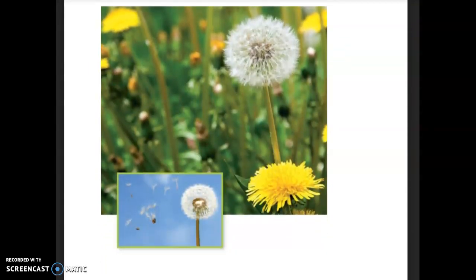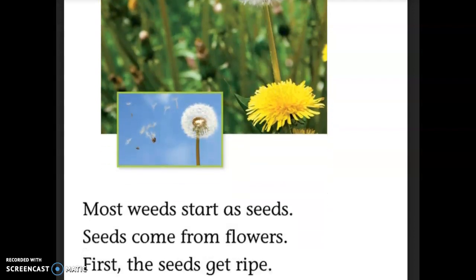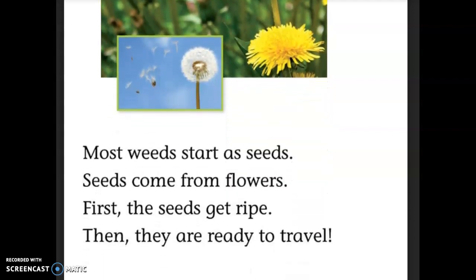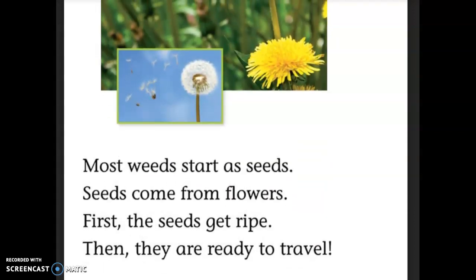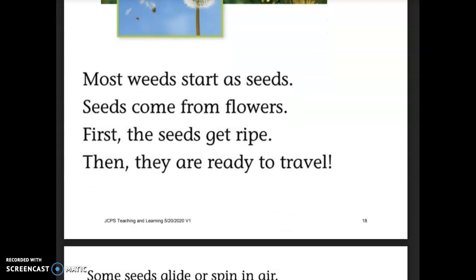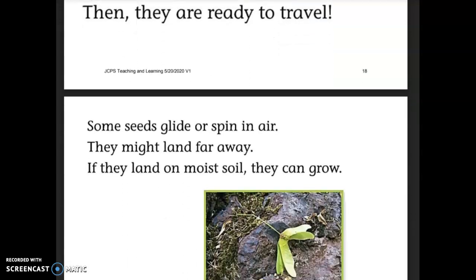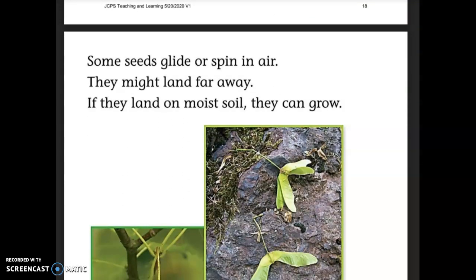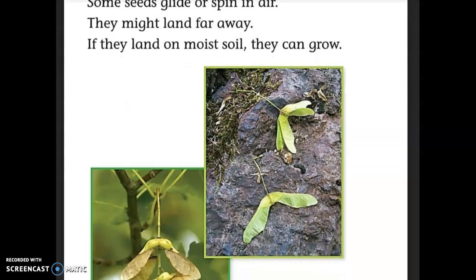We see a picture of a dandelion. Most weeds start as seeds. Seeds come from flowers. First the seeds get ripe, then they're ready to travel. Some seeds glide or spin in air — they might land far away. If they land on moist soil, they can grow.